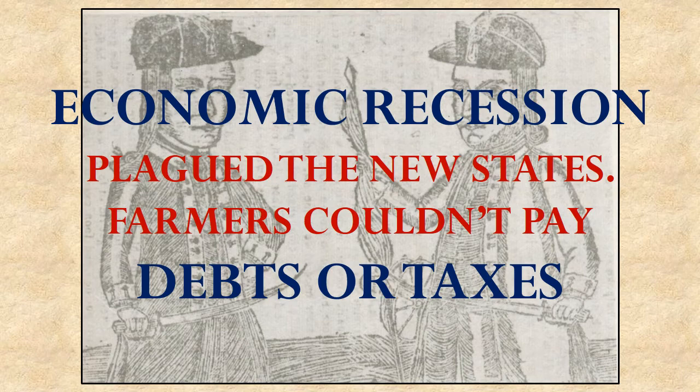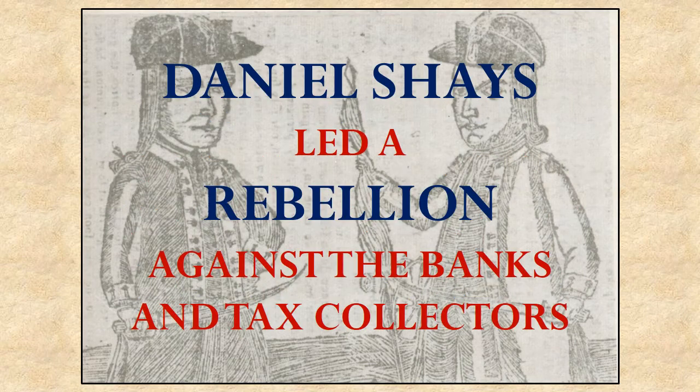A place where this was particularly relevant was in western Massachusetts. A man named Daniel Shays—the background image here is our only contemporary illustration trying to depict him, the person on the left—led a rebellion of these farmers in western Massachusetts.